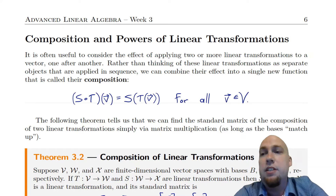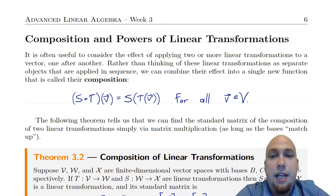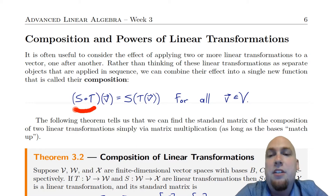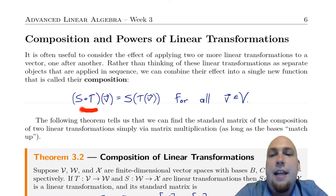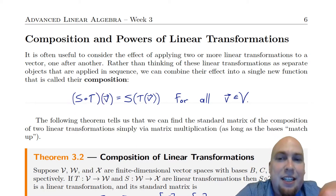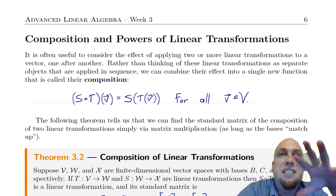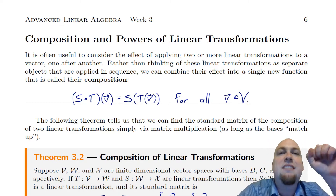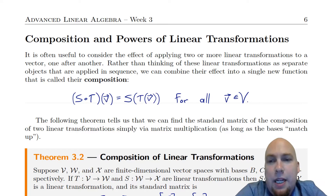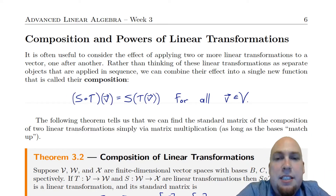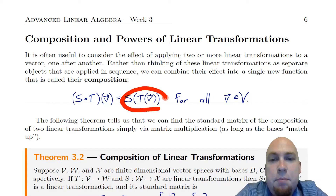Here's how we get off the ground in this lecture. We define the composition of two linear transformations. If s and t are our linear transformations, then s with a little circle between it and t means s composed with t, or the composition of s and t. That's a new function, and how it acts on vectors v from the vector space is it first applies t to the vector and then it applies s.